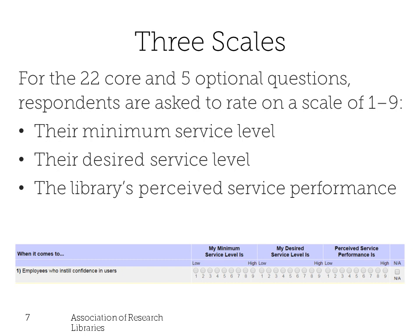The core questions use a triple Likert scale, where users are asked to evaluate a statement — such as library space that inspires study and learning — and give three ratings: the minimum, desired, and perceived. The perceived rating represents the level of service the respondent believes is currently provided, while minimum represents the minimum level of service the user would find acceptable, and desired represents the level of service that the user personally wants, or their ideal level of service.